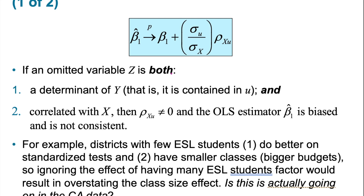The direction of the bias depends on whether this correlation is positive or negative. Districts with few ESL students are going to do better on standardized tests and have smaller classes and bigger budgets. So ignoring the effect of many ESL students would result in overstating the class size effect, because we are capturing more in the student-to-teacher ratio than pure student-to-teacher ratio variation — there is other variation being captured by that coefficient, and so it is biased. We need to specify that other variation.